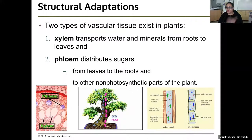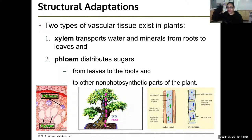Vascular tissue. When we talk about vascular tissue in us, we're talking about our veins, our arteries — all the tubes that blood flows through. Plants also have vascular tissue. They don't have blood; they have what's called xylem and phloem — tubes that run along the entire length of their bodies transporting nutrients. Xylem transports water and minerals from the roots to the leaves. Phloem distributes the sugars from the leaves to the roots and other non-photosynthetic parts of the plant.